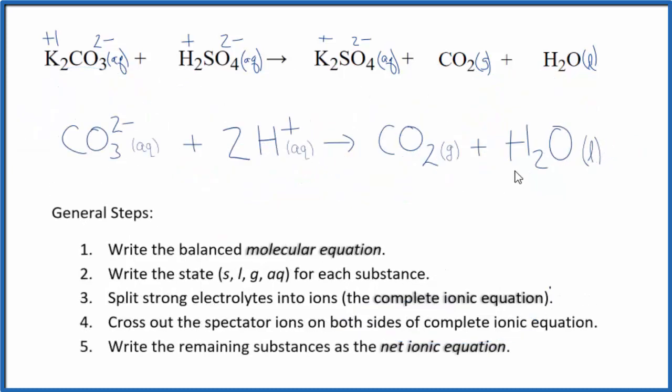So this is the balanced net ionic equation for potassium carbonate plus sulfuric acid. You note that charge is conserved. We have 2 minus here, 2 times 1 plus, that's 2 plus. So they balance out. Our products are all neutral.